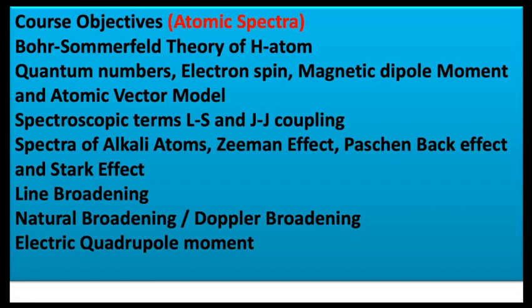Atomic spectroscopy will be covered in 8 to 10 lectures, starting with the Bohr-Sommerfeld theory of hydrogen atom spectra. We will discuss the line spectrum of hydrogen and hydrogen-like atoms, the Bohr theory of hydrogen-like atoms, the Rydberg constant, how it changes with atomic number, the fine spectrum of hydrogen, and coupling schemes such as LS and JJ coupling, comparing them with respect to atomic and nuclear spectra.